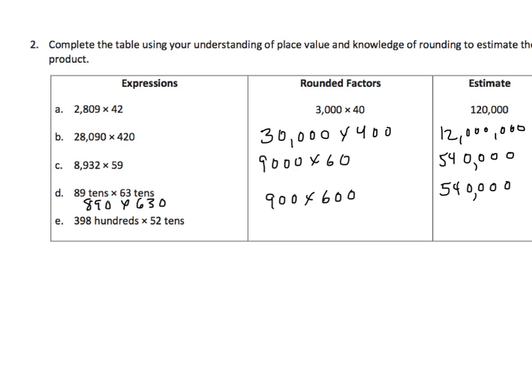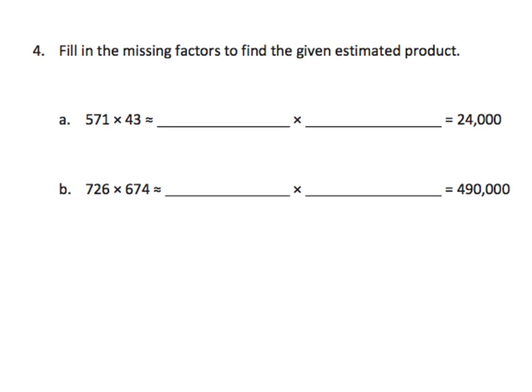Moving on. Yet another format for largely the same work is we are given a pair of factors in the intermediate step here. We need to round both of those. We need to make sure whatever we round it to equals that product right there. I suspect that things will work out just fine.